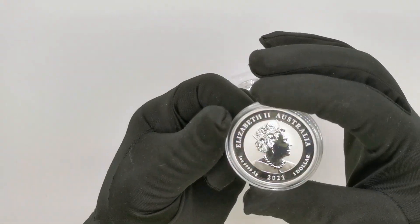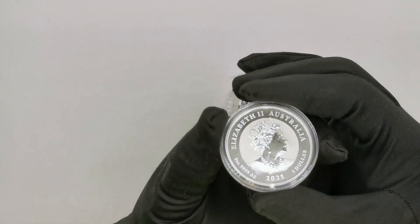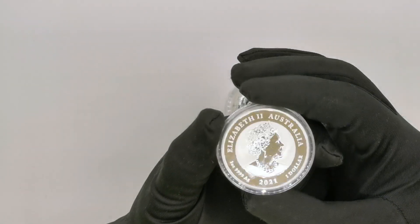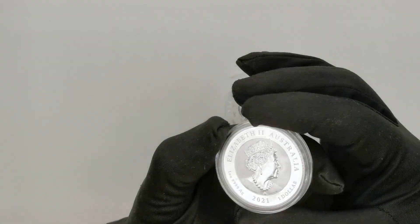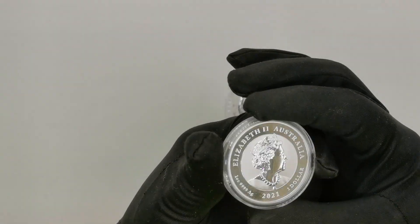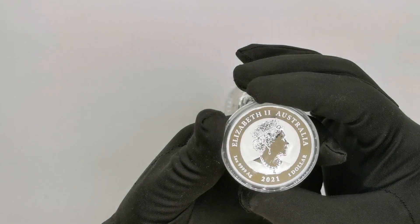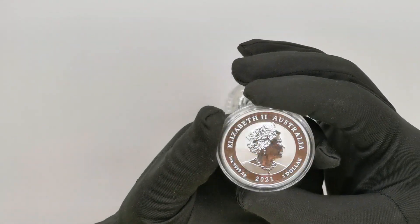Now the obverse is a standard Australian legal tender obverse. So you get the Queen's effigy, you get the one dollar denomination, you get the year date, and you get the coin specs as well.